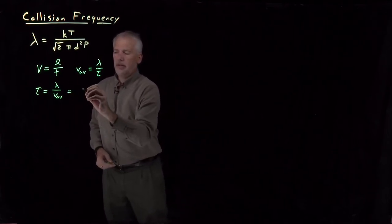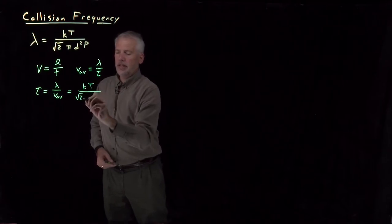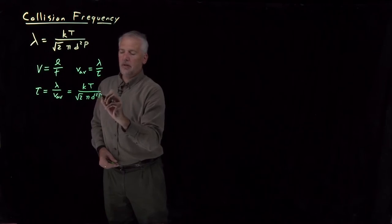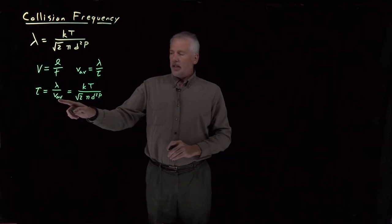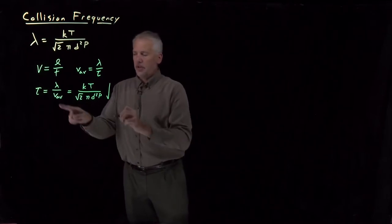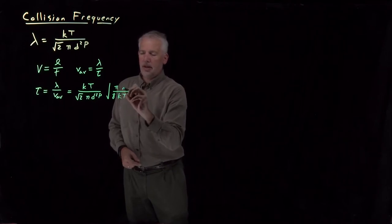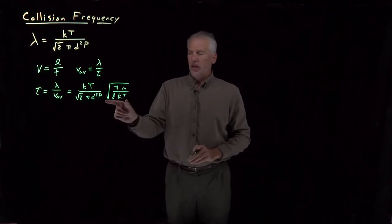The mean free path is kT over the square root of 2, times pi times d squared times pressure in the denominator. The average speed is the square root of 8kT over pi times m. Since average speed is in the denominator of our expression for tau, we write its reciprocal: square root of pi over 8, with kT in the denominator and m in the numerator.